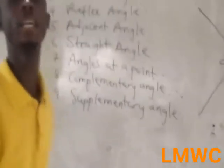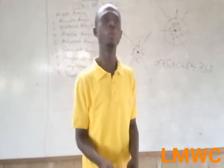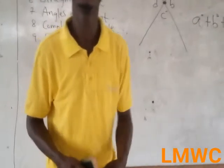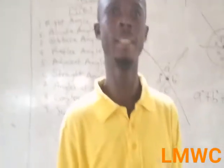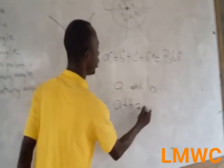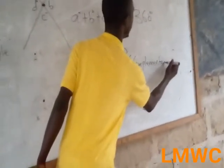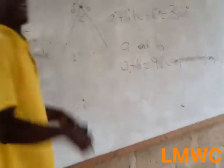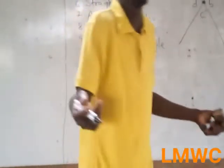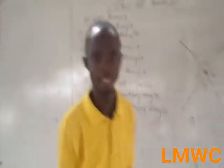Complementary angles — two angles are said to be complementary if they add up to 90 degrees. So if A plus B equals 90 degrees, those are complementary angles. If I give you one angle as 40 degrees and ask you to find the complement, the other angle will be 50 degrees.